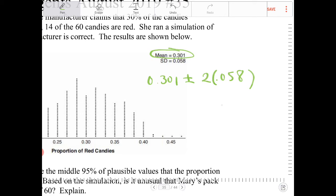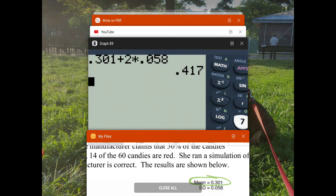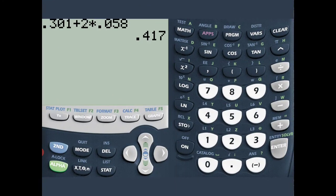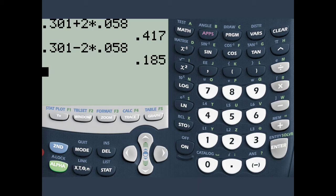So, this will be 0.407. 0.407. And let's do it the other way around. Oh, 0.417, not 0.07. And we're going to do the difference. And that will be 0.185.